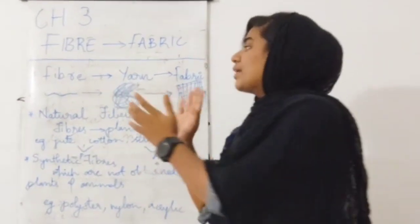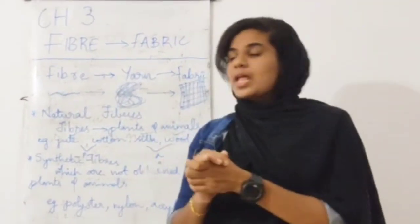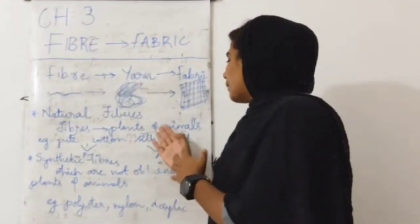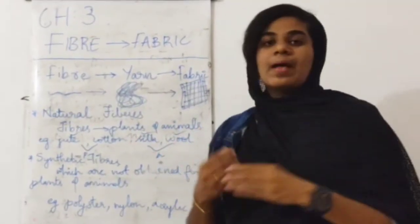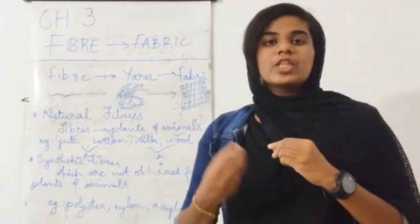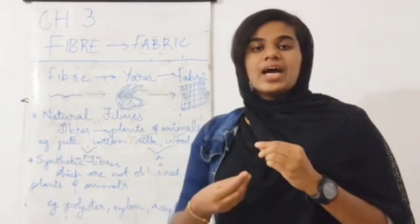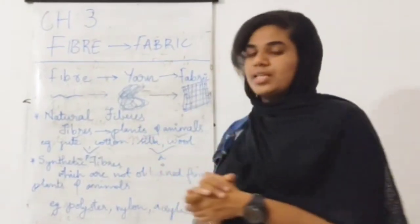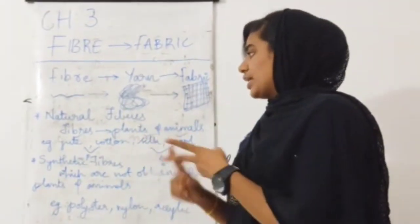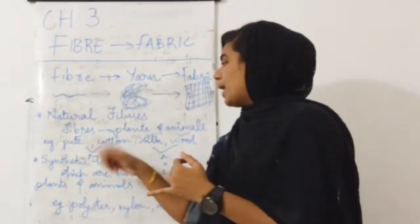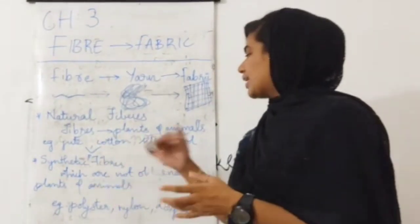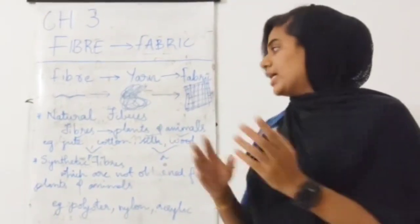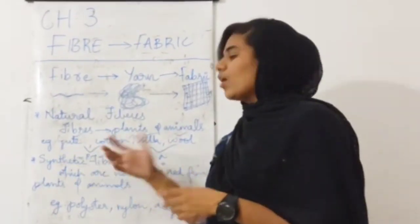Natural fibers are fibers which are made from plants and animals. Fibers obtained from plants and animals are called natural fibers. There are two kinds of natural fibers: plant fibers and animal fibers. Plant fibers include jute and cotton.